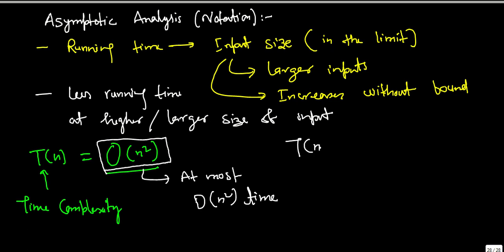If some algorithm has a time complexity or running time big omega of n square, that indicates that it is going to take at least n square time.